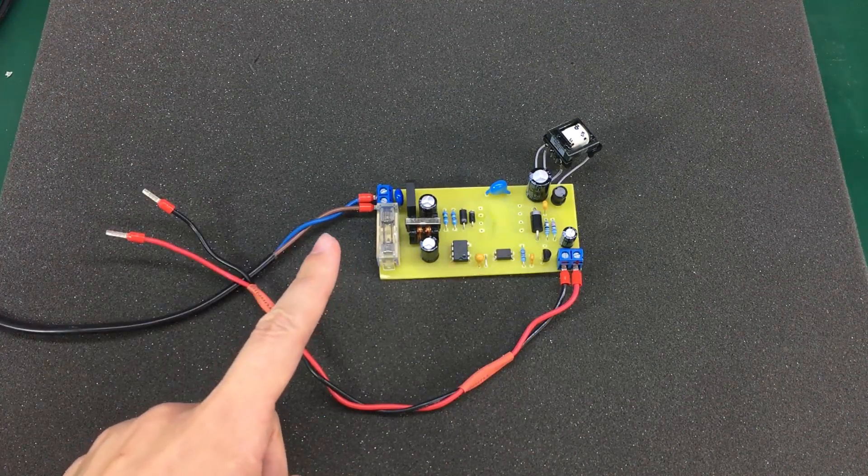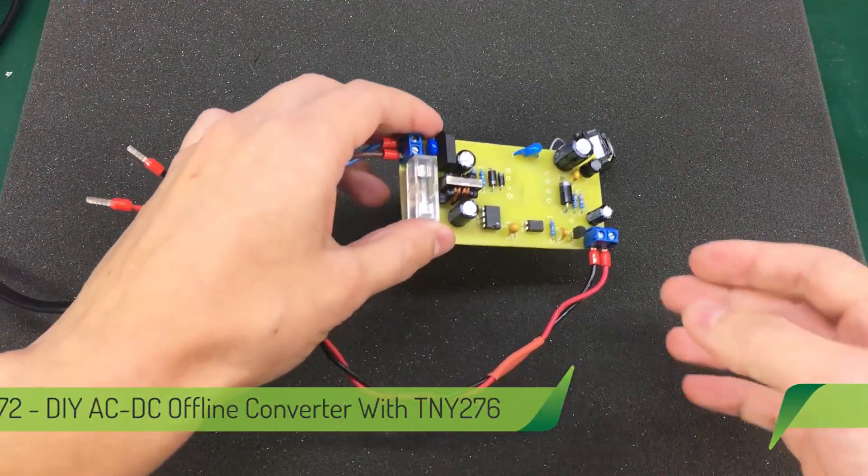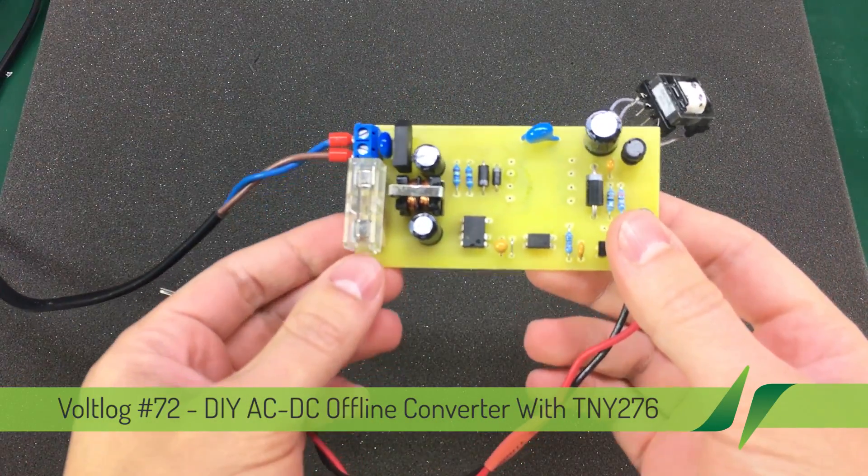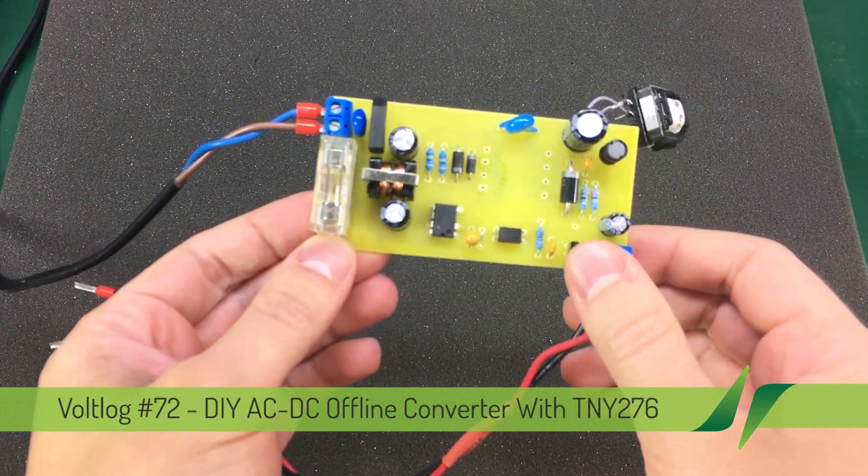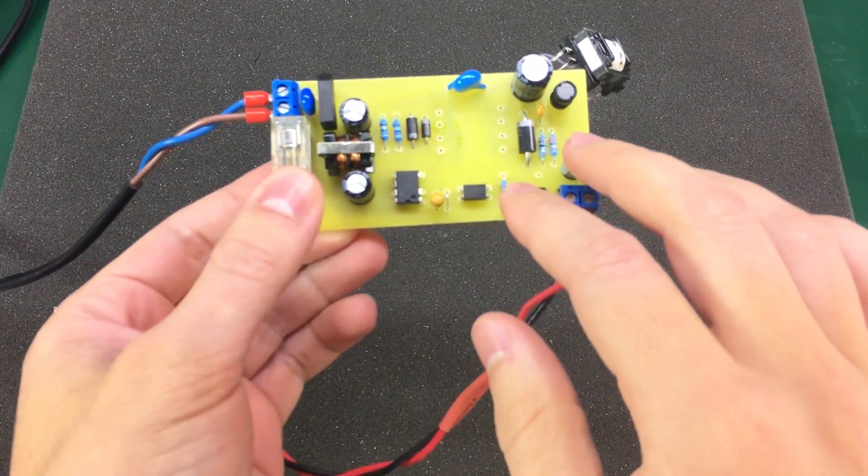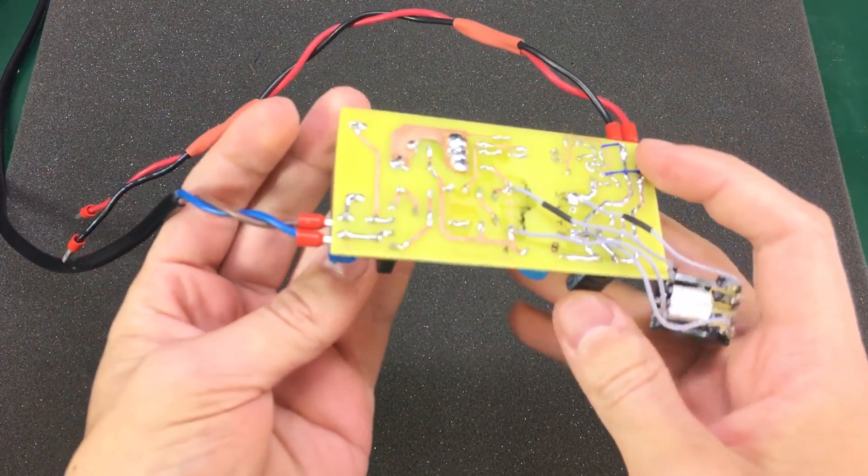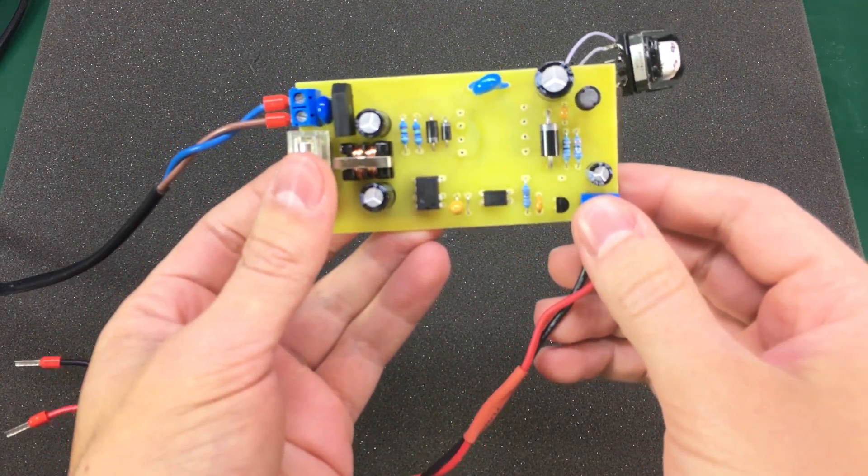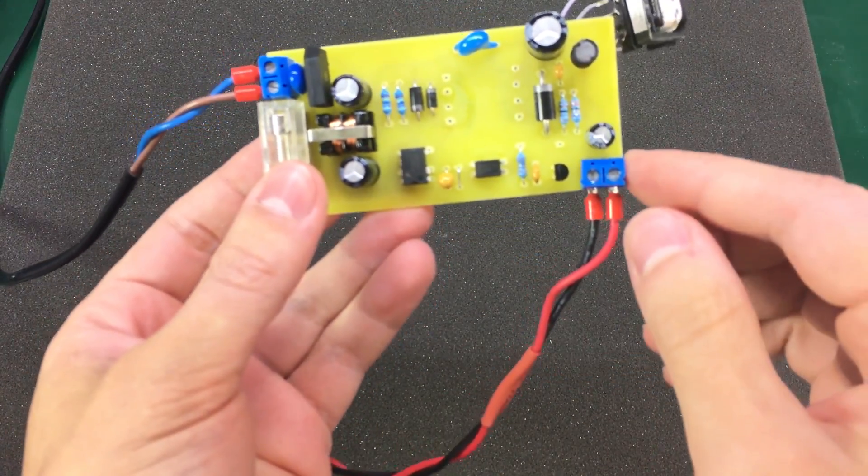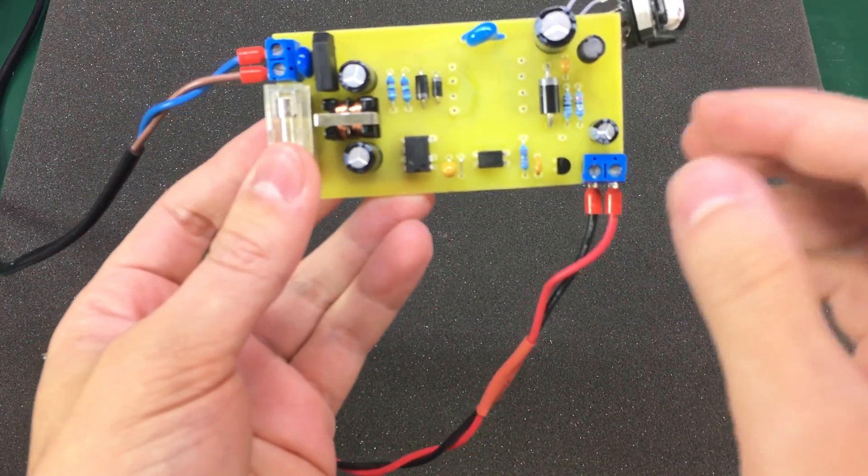A week ago I showed you this AC to DC offline converter that I built myself using the TNY-276 controller IC from Power Integration. I explained in that video how I built the circuit, what tools I used for design, and how the circuit was not working properly. So I suggest you watch that video first if you haven't seen it.